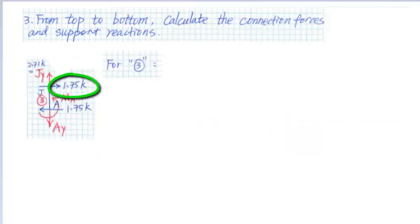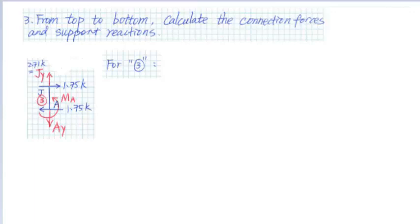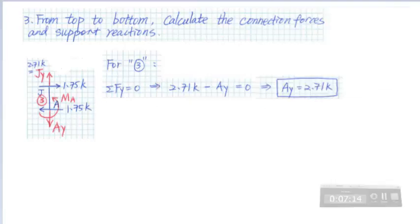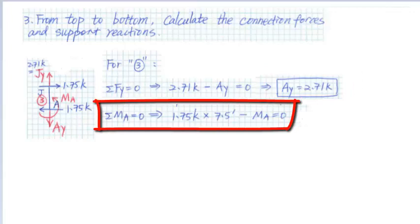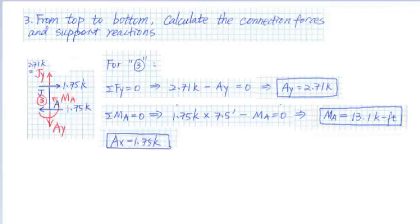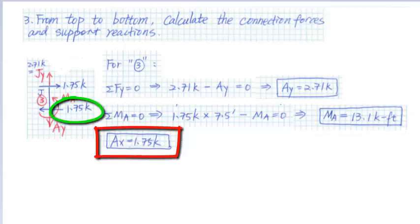For member 3, we have Jx equals 1.75 kips and Jy equals 2.71 kips. There are three unknown reaction forces at support A: Ax, Ay, and Ma. Summing forces in the y direction gives 2.71 kips minus Ay equals 0, so Ay equals 2.71 kips. Summing the moment at point A, assuming clockwise is positive, we get 1.75 kips times 7.5 feet minus Ma equals 0, giving Ma equals 13.1 kip-feet. The x-direction force at support A, Ax, equals V' equals 1.75 kips.